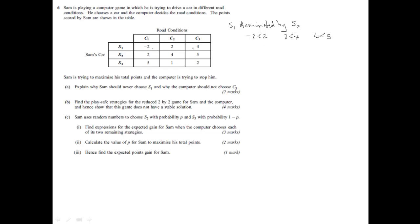We then take a similar approach with the computer's choices. We can see here the computer wants smaller numbers. So we're looking at why the computer wouldn't choose C3. Well, if you look at C2, 4 is higher than 2, so that's worse for the computer. 5 is higher than 4. And 2 is higher than 1. So here we can write C3 dominated by C2. And again, put the values in. 4 greater than 2. 5 greater than 4. And 2 greater than 1.